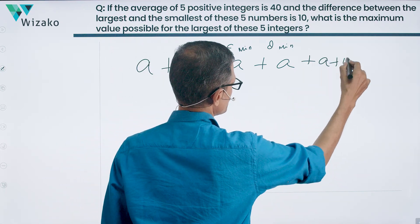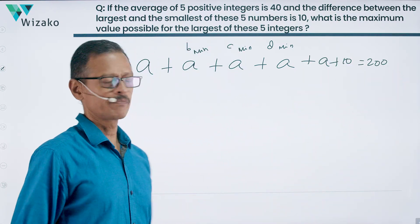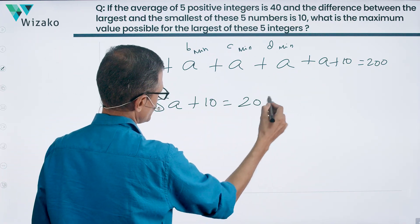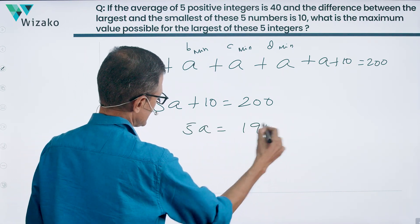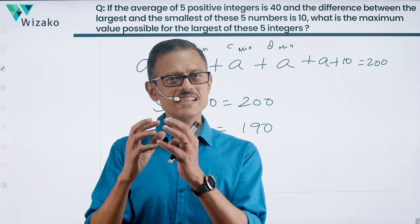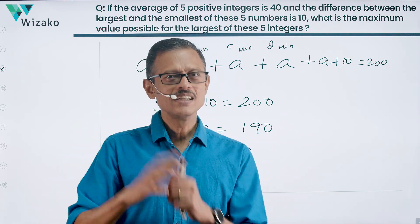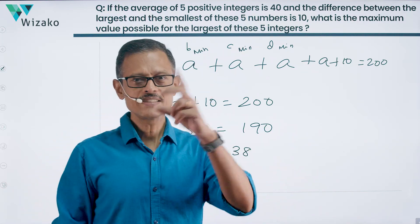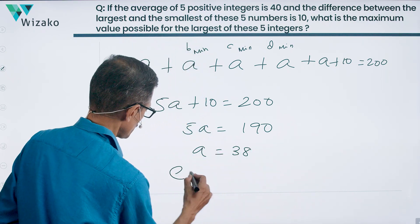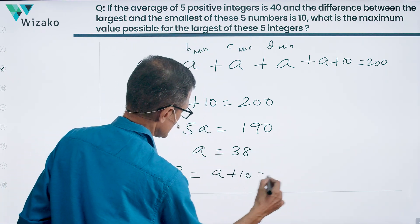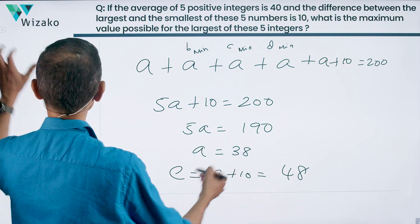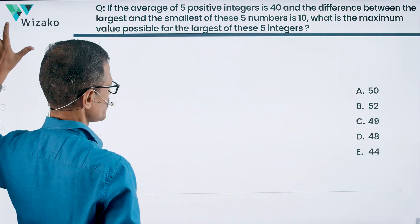5A plus 10 equals 200, so 5A equals 190, meaning A equals 38. B, C, D will also be 38. The maximum possible value for E is A plus 10, which equals 48. So the maximum possible value for the largest of these five integers is 48. Choice D is the correct answer.